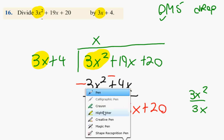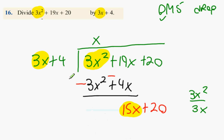Repeat procedure. Take the first part of this. Look at the first part up here. What's 15x divided by 3x? Plus 5.